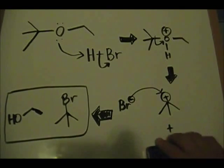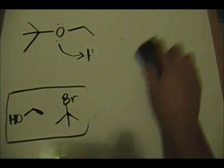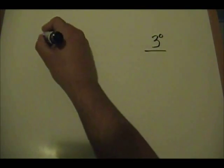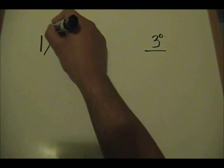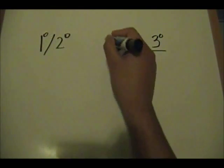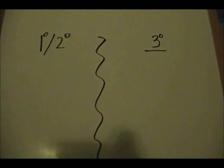Before I end the video and this part on the reactions of ethers with strong acids, I want to just give you guys a little table kind of summarizing the main points of this topic. So in one category you have a tertiary ether and in the other category you have the primary slash secondary ethers.